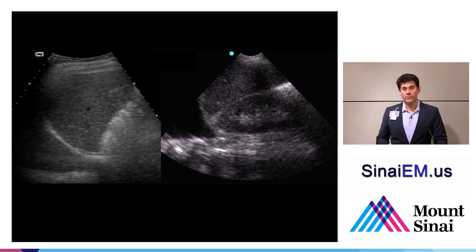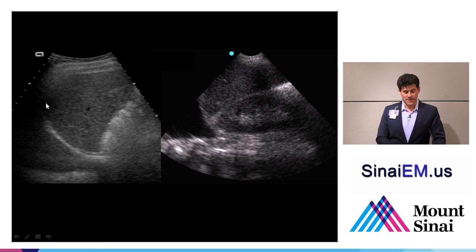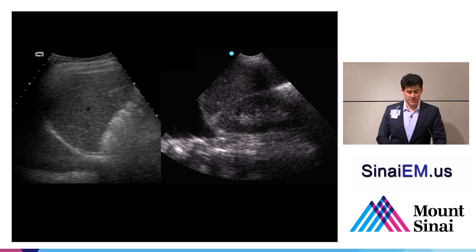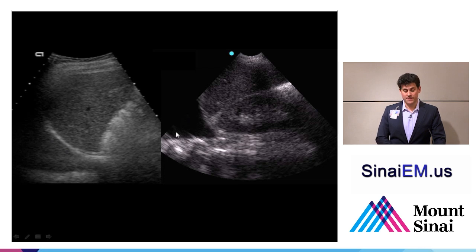While we're in this right upper quadrant view, we can also take a look a little bit higher, looking above the diaphragm. On the left-hand side here, we see the liver and the diaphragm, and looking above the diaphragm we see a mirror image artifact — a reflection of liver tissue appearing to extend into the thorax. This isn't actually liver tissue in the thorax, but just a reflection. This mirror image artifact is normal and what you'd expect to see in most patients. When we lose that mirror image artifact, it's actually a sign of hemothorax, pleural effusion, or some other fluid collection in the thorax.